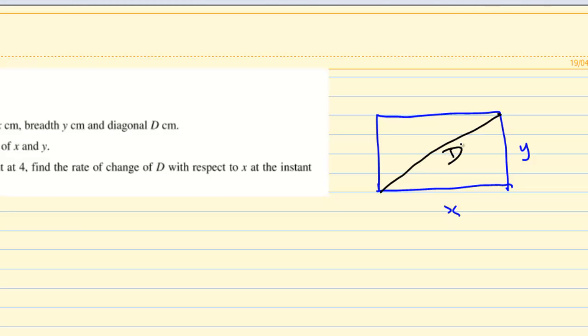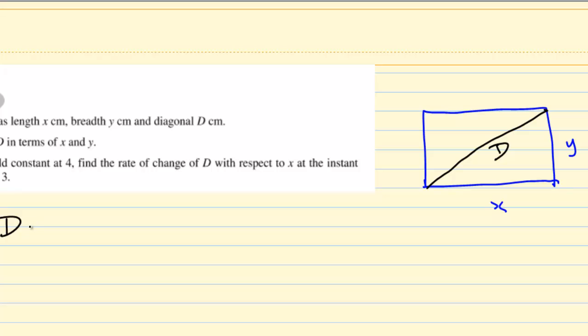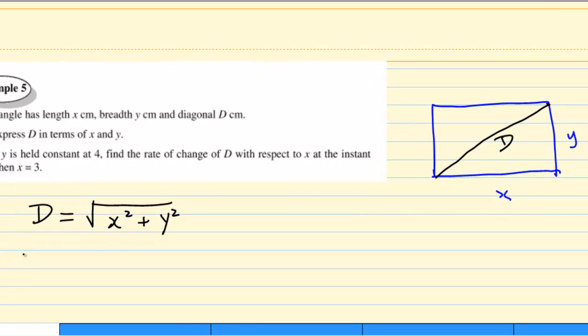So, what is the length of diagonal? Since you have a right angle triangle, D is equal to square root of x square plus y square. So D is a function in terms of x and y, which is square root of x square plus y square, or x square plus y square raised to the power of half.